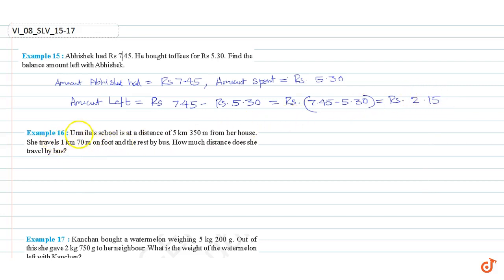Example 16. Urmila's school is at a distance of 5 km 350 m from her house. She travels 1 km 70 m on foot and the rest by bus. How much distance does she travel by bus?